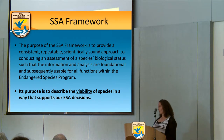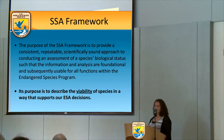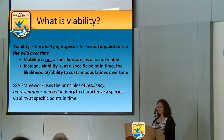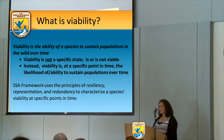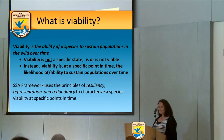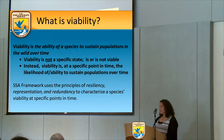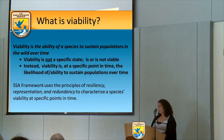The ultimate purpose of the SSA is to describe the viability of a species in a way that supports our decisions under the Endangered Species Act. Viability means the ability of a species to sustain populations in the wild over time — it's not a specific state. A species isn't simply viable or not viable; viability is the likelihood of the ability to sustain populations over time. The SSA uses the principles of the three R's — resiliency, representation, and redundancy — to characterize the species' viability at a specific point in time.